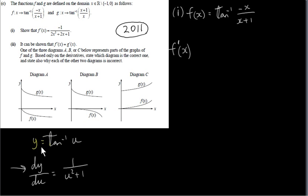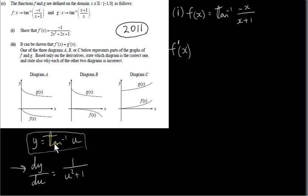In a previous video, we proved that the derivative of inverse tan of u is 1 over u squared plus 1. This result is also tabulated. So the derivative of inverse tan x with respect to x is 1 over x squared plus 1. I'm calling it u here to avoid confusion. We're going to have to use the chain rule because this function is more complicated than just inverse tan of u.